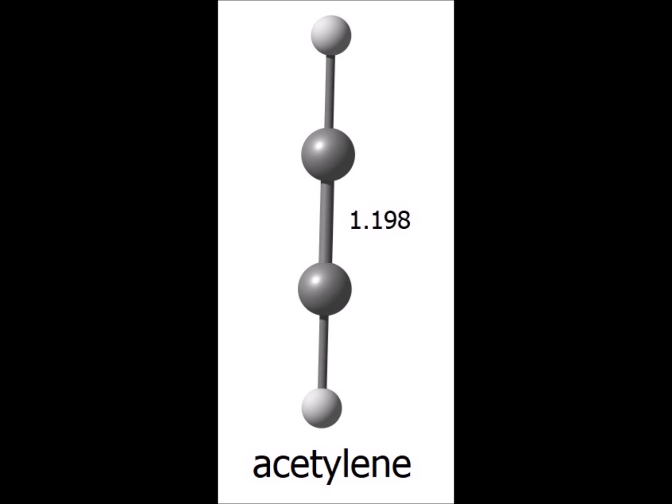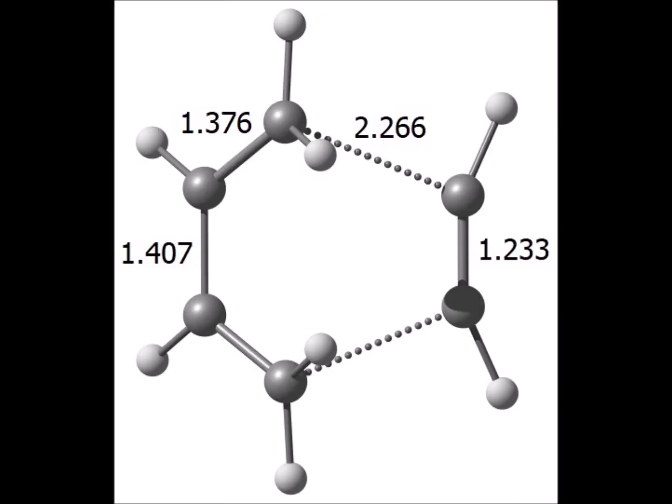Here is the computed structure for the dienophile in the next reaction, which is an alkyne — the simplest one, acetylene. This sketch emphasizes that an alkyne has a triple bond, whereas an alkene has a double bond, but both are suitable as the dienophile in a Diels-Alder reaction because they are a pi system. Here is the computed transition state for the Diels-Alder addition of 1,3-butadiene to acetylene. Notice the incipient sigma bonds are represented by the dashed lines in the diagram.